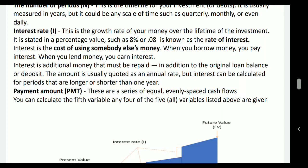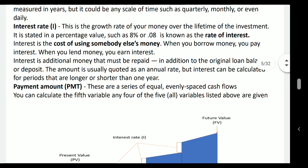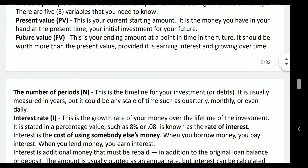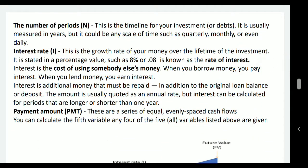Payment amount — this is a series of equal, evenly spaced cash flows. If the interest is paid in equally spaced amounts, or if interest plus principal is paid in a lump sum at regular intervals, those are called payment amounts. You can calculate the fifth variable if any four of the five variables — present value, future value, number of periods, interest rate, and payment amount — are given. Using the engineering economics formulas, you can find out the fifth parameter.